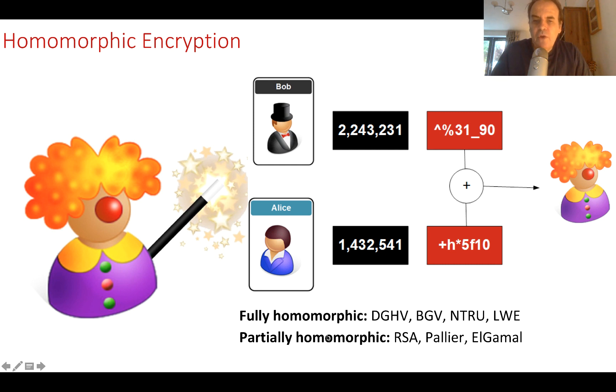There are some fully homomorphic encryption methods, such as DGHV, which was produced by Gentry, BGV, NTRU, and learning with errors. These methods here are typically the quantum robust methods that we have that are naturally fully homomorphic.